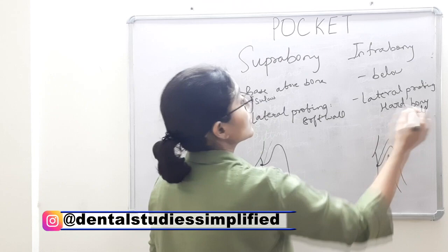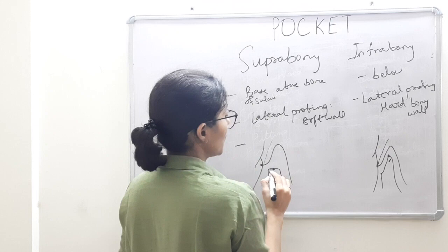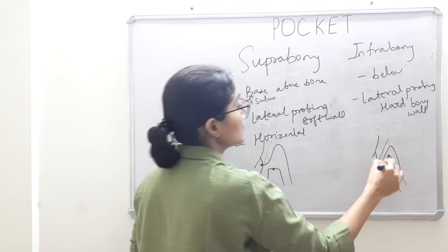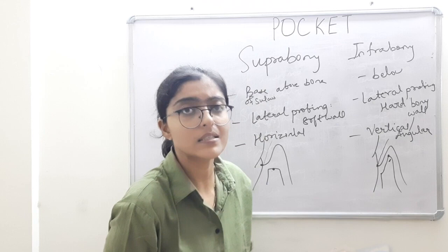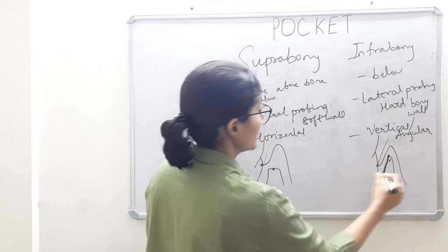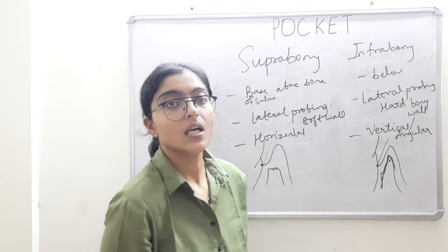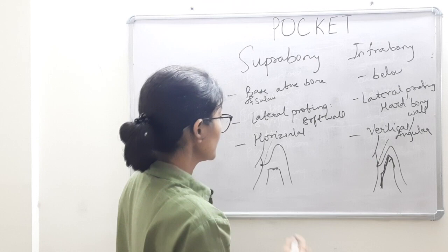Suprabony pockets usually have a horizontal bone loss pattern, whereas infrabony pockets have vertical or angular bone loss. Difference between vertical and angular bone loss: they are the same — vertical and angular because there is some angle of bone loss. In horizontal bone loss it is flat, while in vertical or angular bone loss there is some angle.